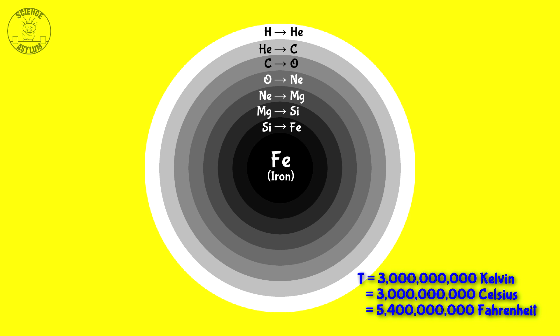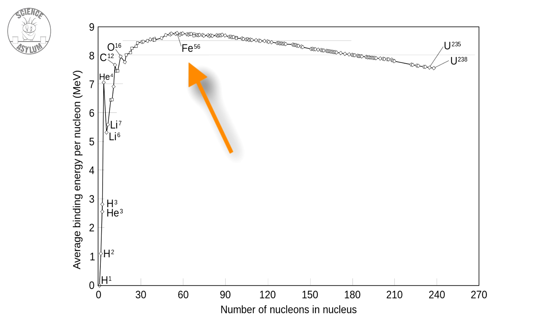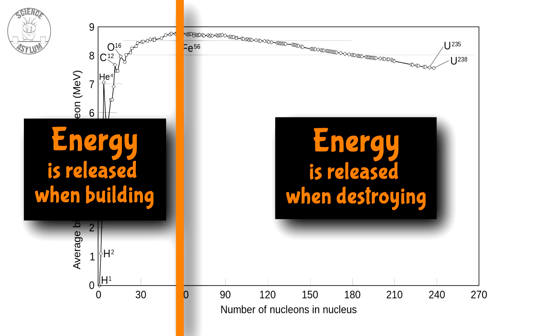The iron nucleus has the highest binding energy of all the elements, so fusing it into bigger stuff takes more energy than it releases. It's the end of the line. Once a star starts making iron, it has a matter of days before it runs out of fuel. Yes, in a lifetime of millions of years, the last stage takes days.